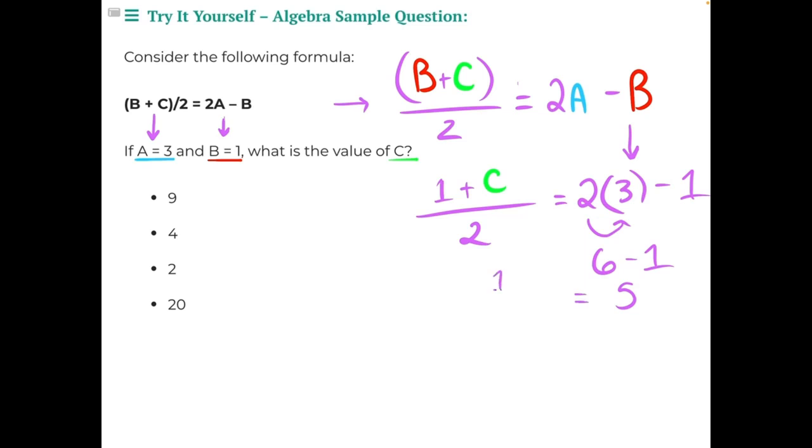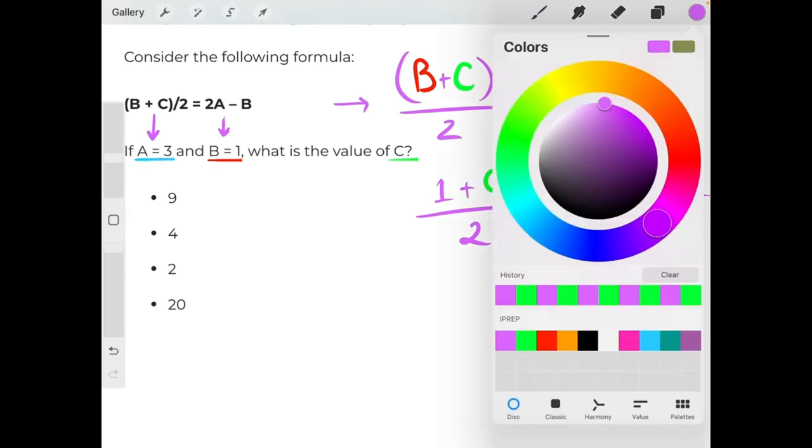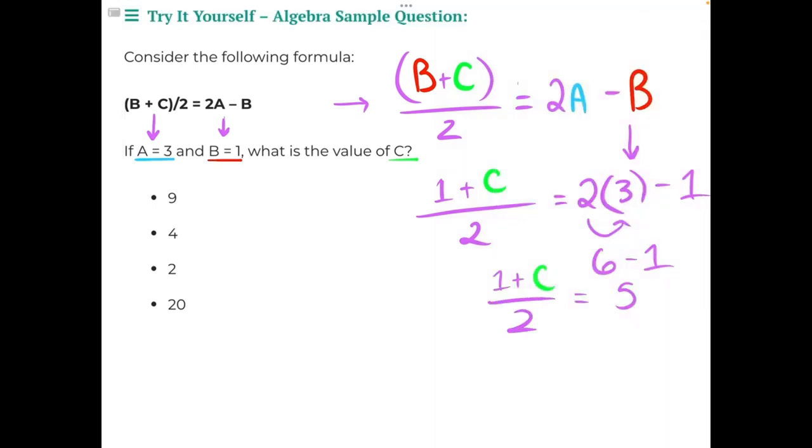on the other side of the equals sign. So 1 plus, I'll keep c green so that it's easy to see what we need to isolate, divided by 2. We've simplified the right side of the equals sign as much as we can, so we need to focus now on the left side of the equals sign.